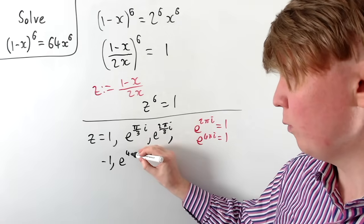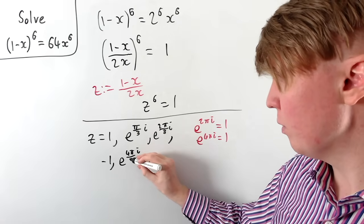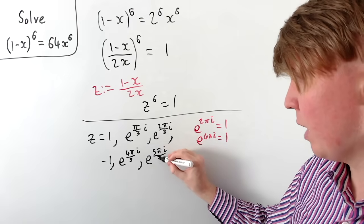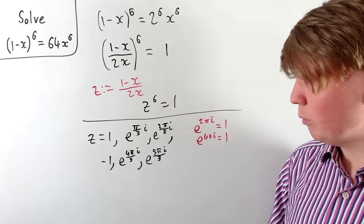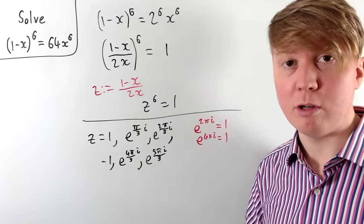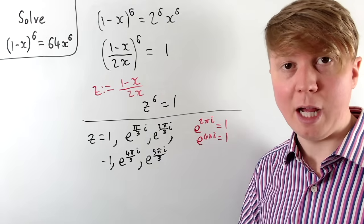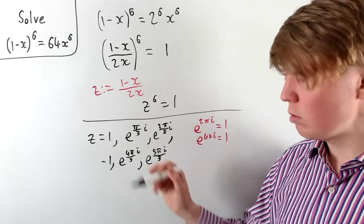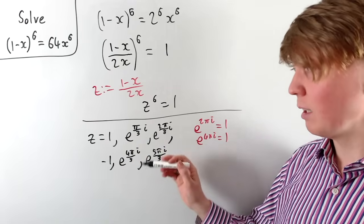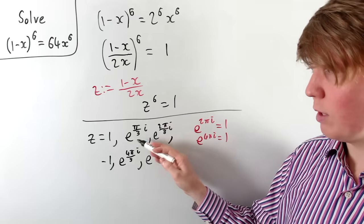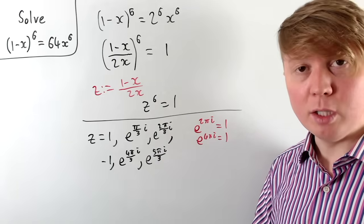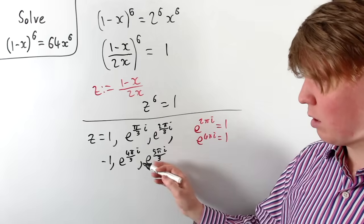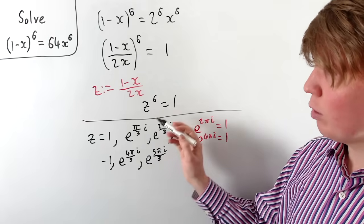The next roots of unity are e to the 4πi/3 and e to the 5πi/3. We stop there because e to the 6πi/3 is just e to the 2πi, which is simply 1 again — a repeat. Going further would just multiply each root by e to the 2πi, i.e., by 1, giving the same values. So we have our 6 complex solutions for z.